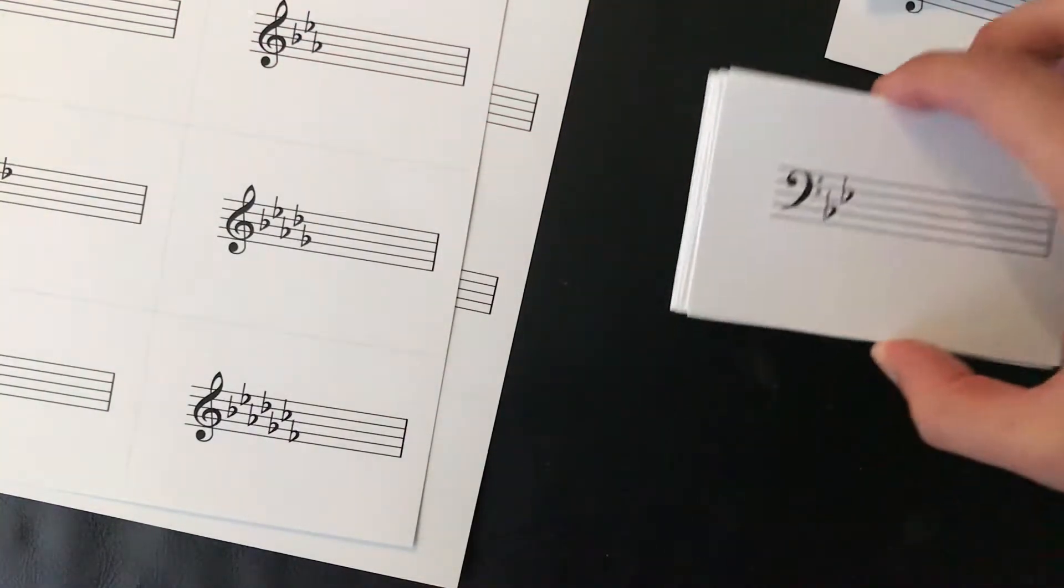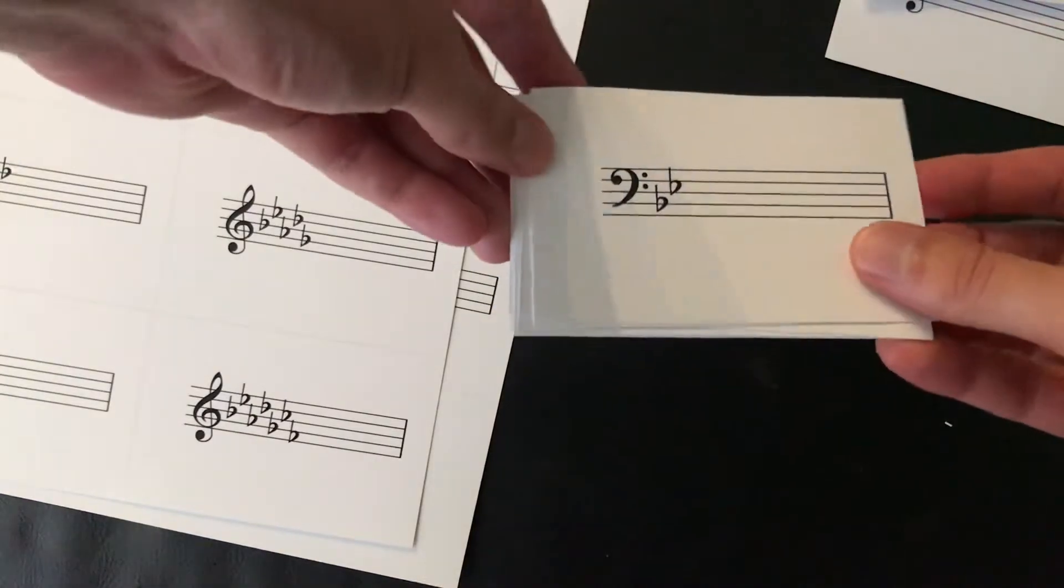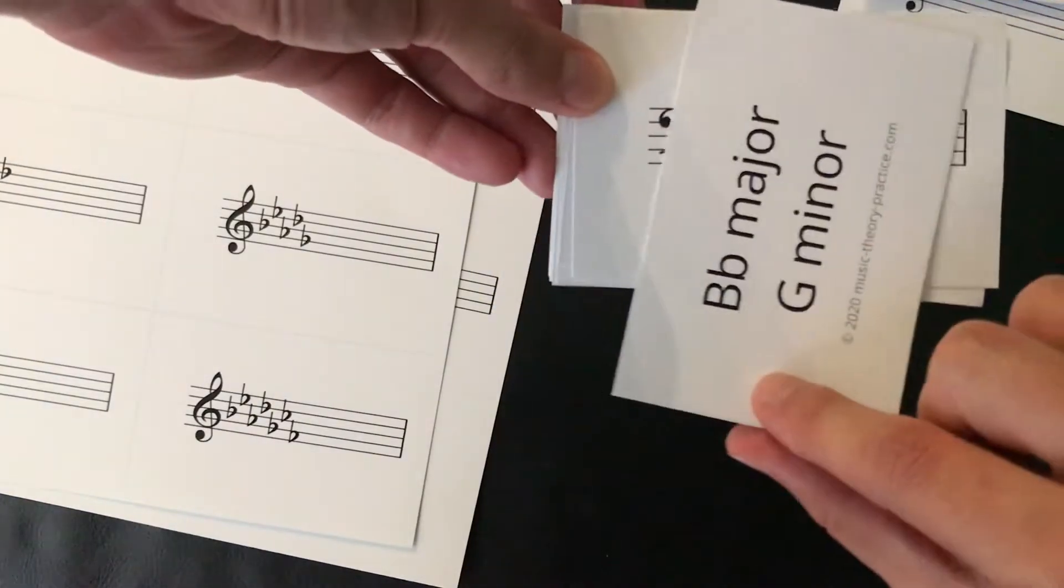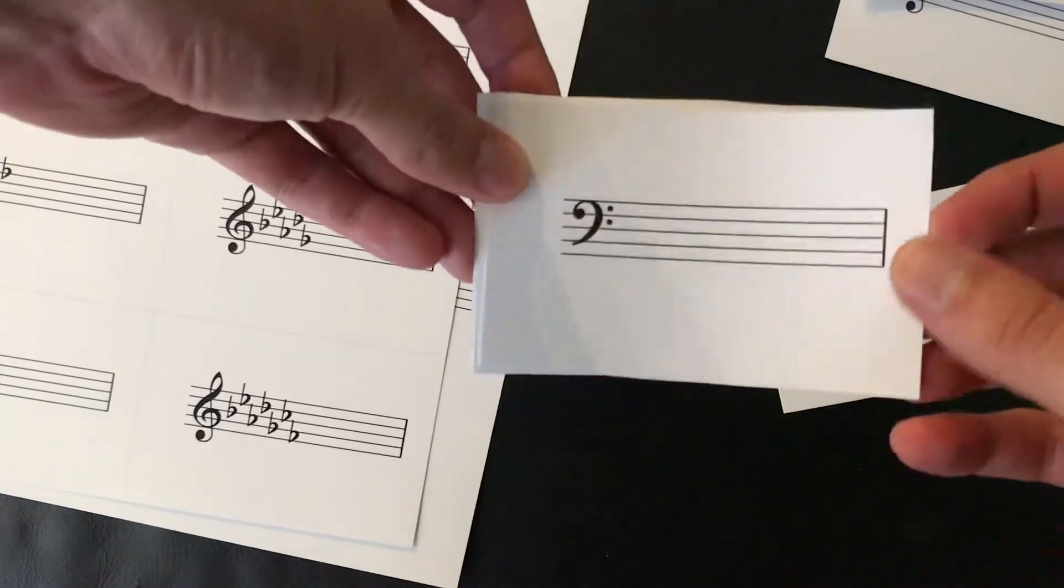Here are the bass clef key signatures, right? Here we have B flat or G minor, C or A.